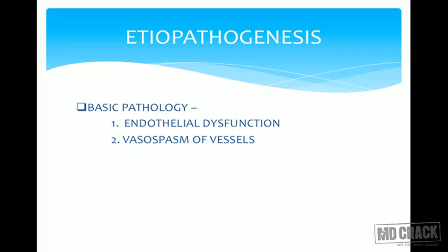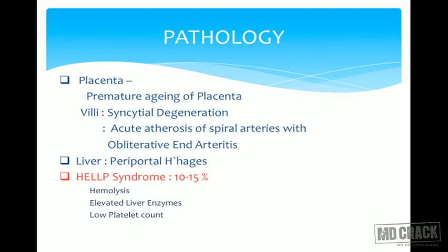There is endothelial dysfunction and vasospasm. There are fewer vasodilator agents relative to vasoconstrictors, so vessels remain under vasoconstriction, leading to increased blood pressure. In the placenta, there is premature aging, syncytial degeneration of villi — called acute atherosis of spiral arterioles — and obliterative endarteritis. These vascular changes are also seen in the liver and kidneys.